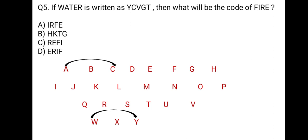Similarly, A is coded as C. In WATER, W is Y, A is C, T is again coded as V skipping one letter. E has been coded as G and R as T. Means, every letter is coded in forward direction skipping one letter.